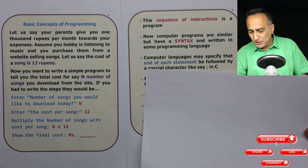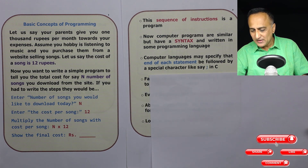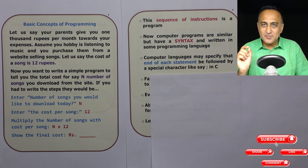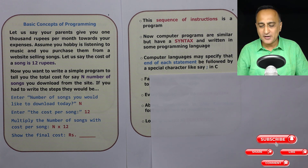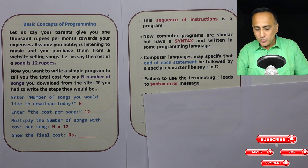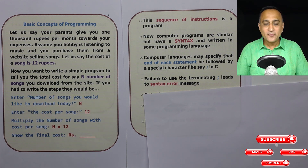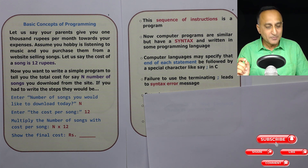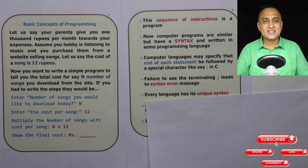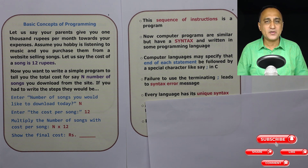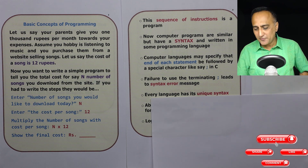Computer languages may specify that each statement or instruction be followed by a semicolon, so the computer knows you have finished one line of instruction. Failure to put a semicolon, if writing a computer program, may lead to something called a syntax error, because you did not follow the rules of grammar while writing the instructions. Every language will have its own unique syntax — just as the rules of grammar differ between Hindi, English, and other languages, the syntax of computer programming languages is going to be different for each particular language.